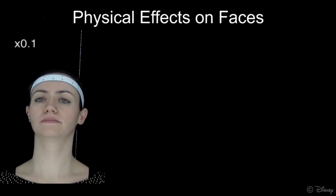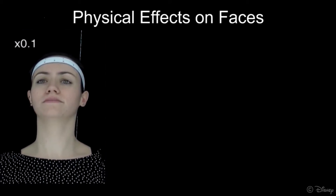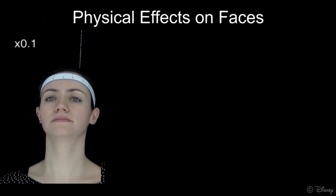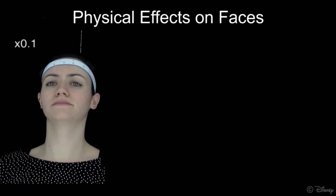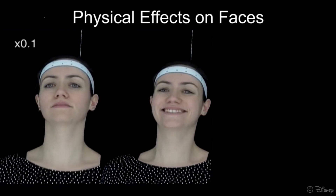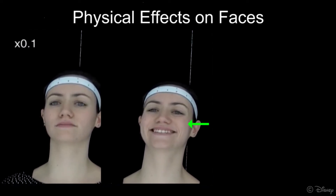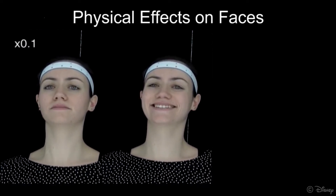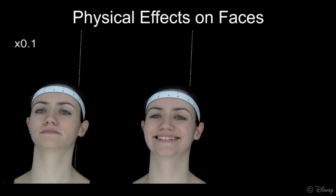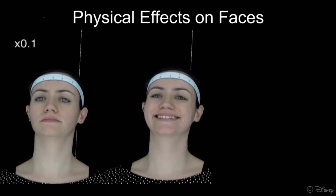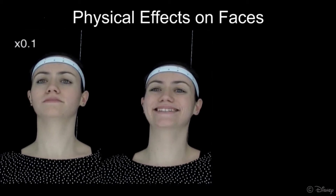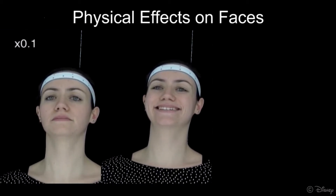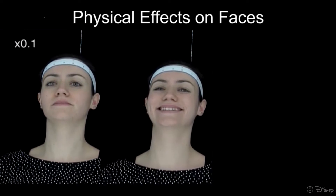Here we see high speed video footage of a person running. Notice the secondary motion, especially around the cheeks. The dynamics of the face are expression dependent, since muscle activation can stiffen the surrounding tissue, changing the physical material properties. This is evident when she performs a smile — now the cheek tissue has become stiffer and exhibits different dynamic behavior.